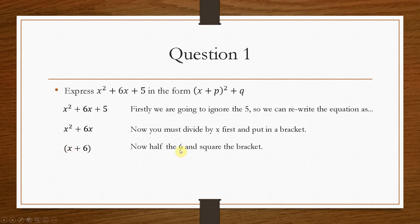And then we have to half the 6 and then we square the bracket. So we end up with this arrangement here. And we've now found the value of p, because this bit here is exactly the same as this bit here.